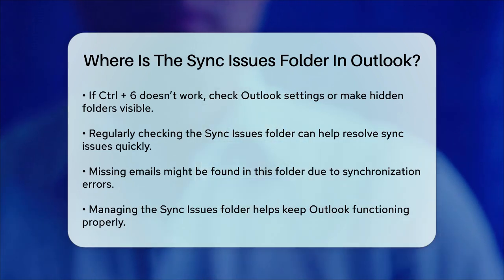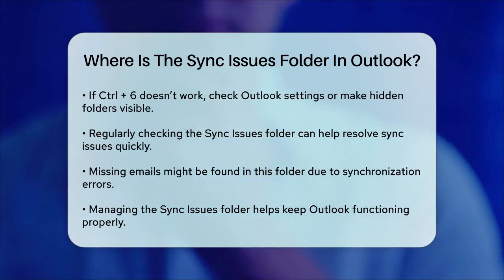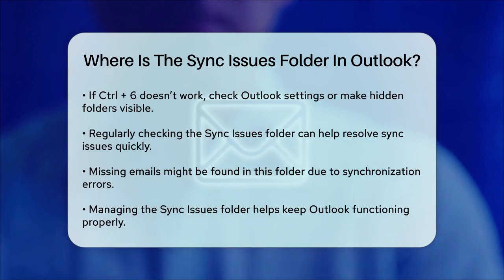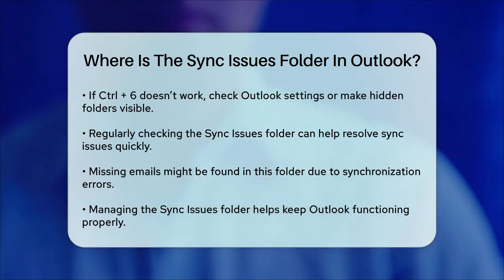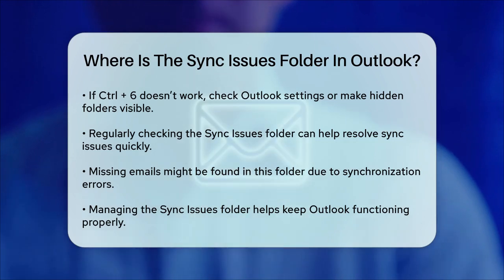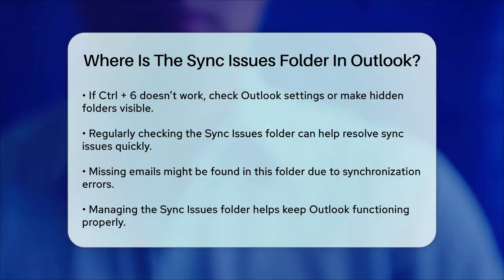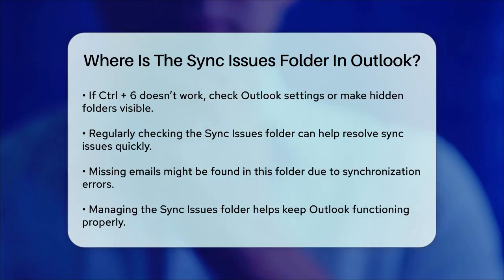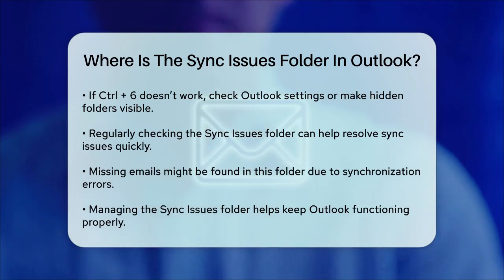In summary, the Sync Issues folder is a hidden but essential part of Outlook that helps you manage synchronization issues. By using the Control-6 shortcut in the desktop app or navigating through the settings in OWA, you can easily locate and manage this folder to keep your Outlook running smoothly.